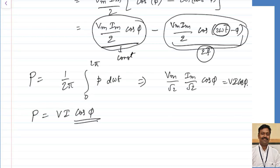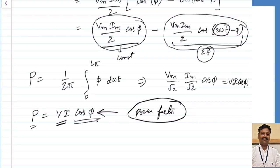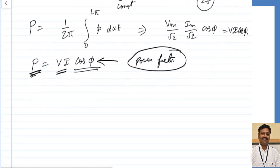We got the average power P = V·I·cos(φ). There is an extra term cos(φ) compared to DC where P = V·I directly. This extra factor is multiplied to get the actual value of power consumed, which is why it is called the power factor. Ideally I want cos(φ) to equal 1, but practically it will not equal 1 because of the effect of inductance in all practical circuits.